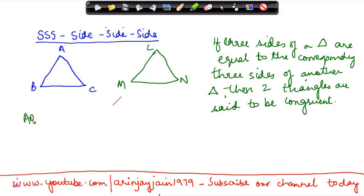For example, side AB of this triangle is equal to MN, BC is equal to NL, and AC is equal to LM.